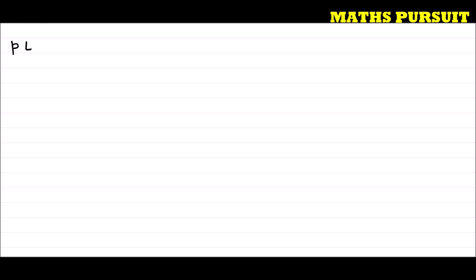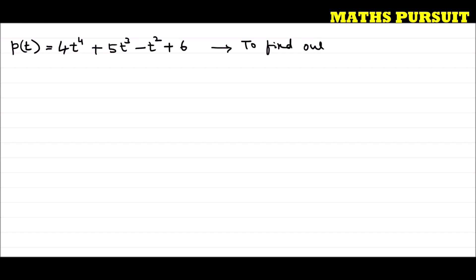The question has given us this polynomial p(t) = 4t⁴ + 5t³ - t² + 6, and is asking us to find out the value of p(t) — that is, to find out the value of this equation when t is equal to a.